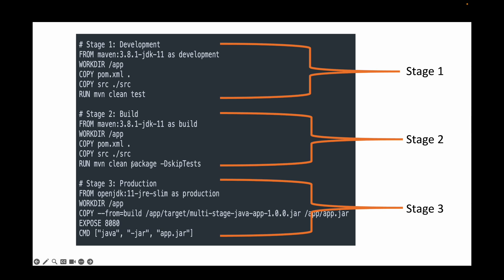In stage three you can see the COPY step: from the build stage we copy the artifacts — specifying the source and destination — and then we start our service by deploying the jar application. This is our multi-stage build. You can have as many stages as you like, but for this example I've gone with three: the development stage, the build stage, and the production stage. When you build this, your final image will only contain stage three.